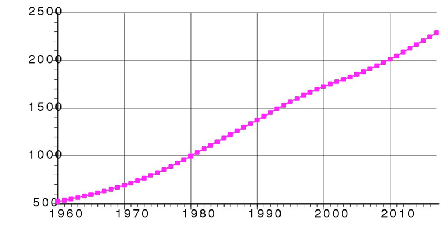Population growth rate: 1.55%. Birth rate: 22.1 births per 1,000 population (2017 estimate). Death rate: 9.6 deaths per 1,000 population (2017 estimate). Median age — total: 24.5 years; male: 23.5 years; female: 25.6 years.